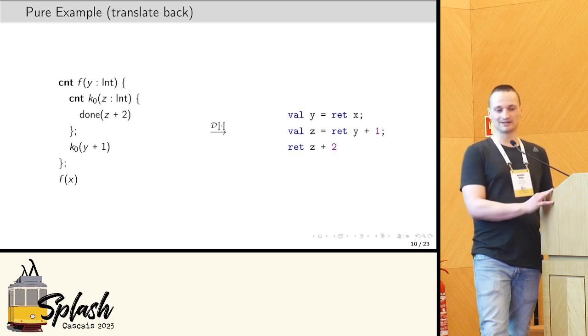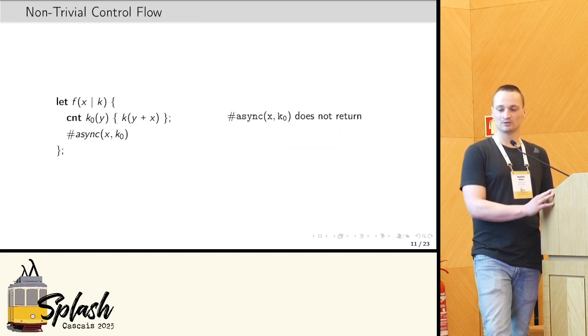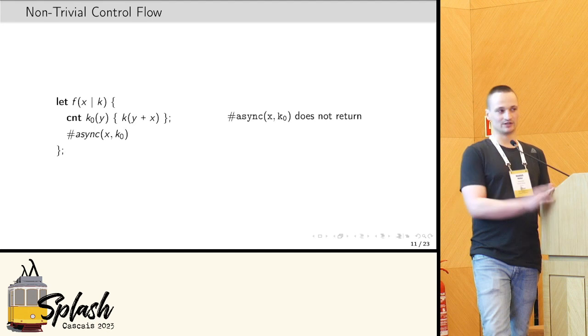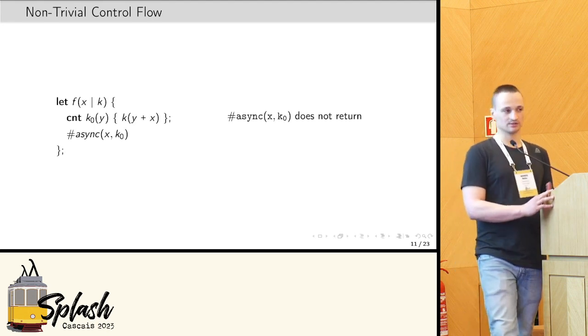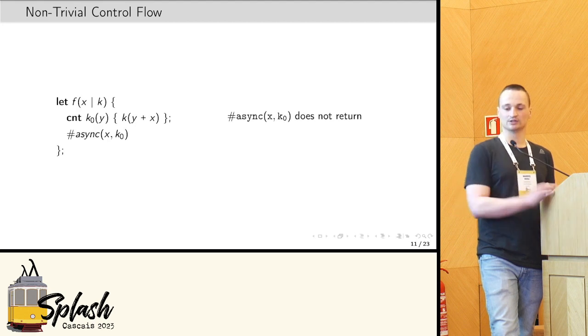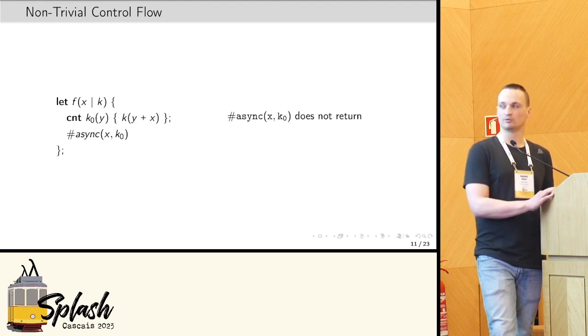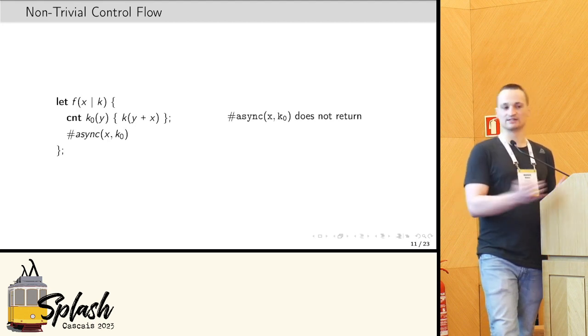But that's not the whole story, right? In CPS, complex control flow can arise, or we can implement complex control flow, so consider this example. Again, define a function, and then we define a new continuation based on the old one, and then we pass this continuation to this primitive operator, say it's an async operator. It does not return.